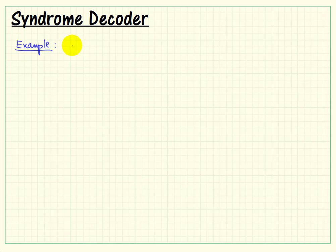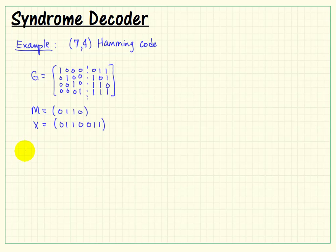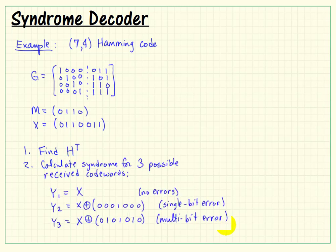Let's take a quick look at starting an example that I'd like you to continue as part of this project. Supposing we have some specific values for the generator matrix, a specific message, and a specific codeword. I'd like you to find the parity check matrix and then also calculate the syndrome for three possible received codewords. And then discuss your results.